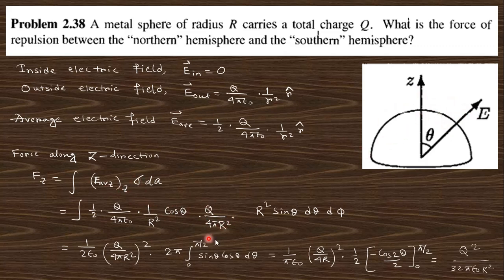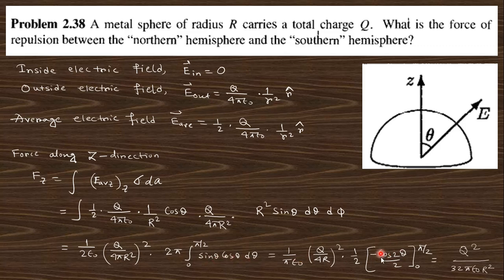Here σ = Q/(4πR²) is the surface charge density, and dA = R²sinθ dθ dφ in spherical coordinates. Substituting, the integral over φ gives 2π, and the θ integral from 0 to π/2 of sinθ·cosθ gives 1/2. After simplification, the repulsive force between the two hemispheres is F = Q²/(32πε₀R²).